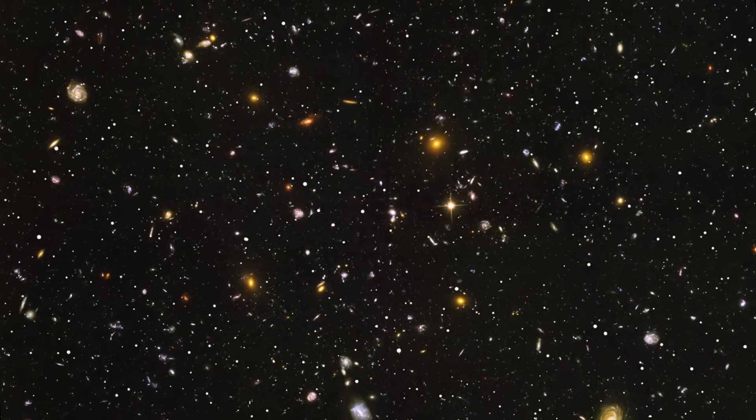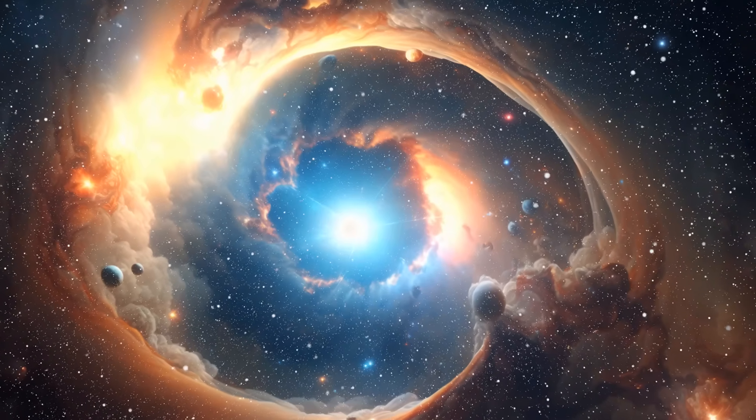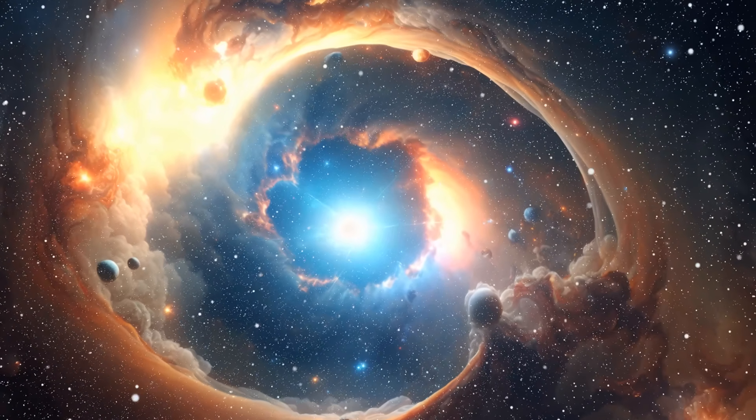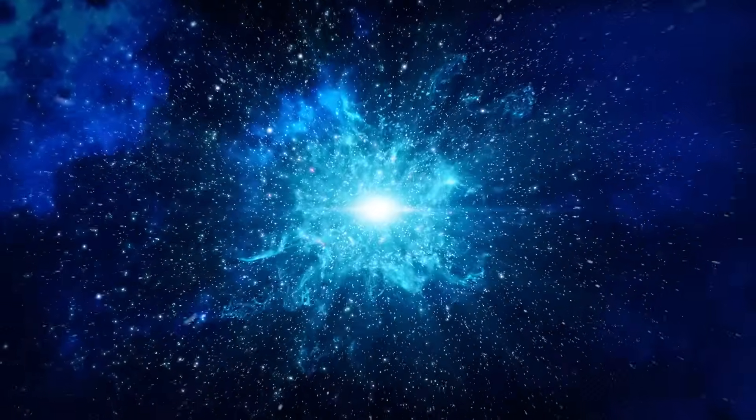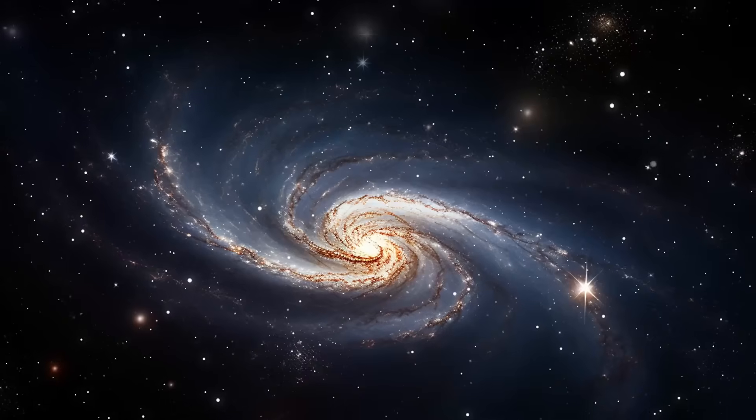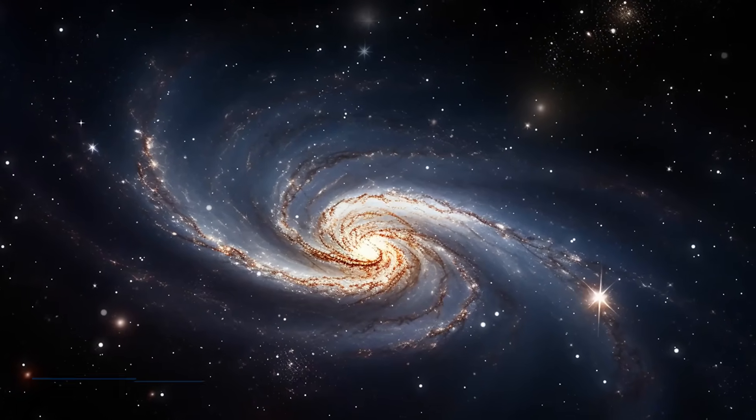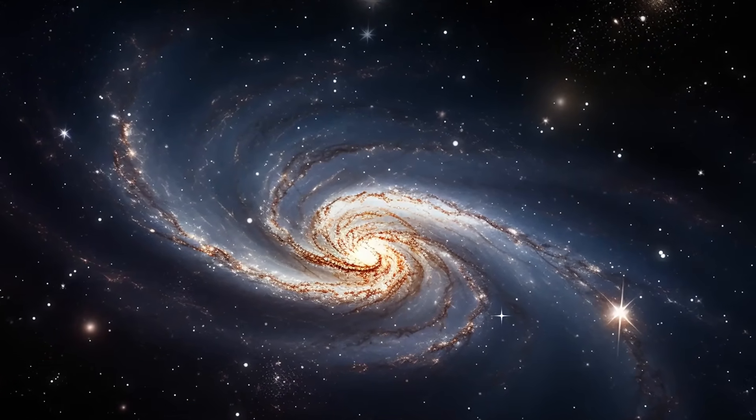In one of the most striking observations, Webb identified what appears to be a massive galaxy in the making, forming only 180 million years after the Big Bang. This is radically earlier than previous estimates, which suggested that the first galaxies would take at least 400 to 500 million years to form.